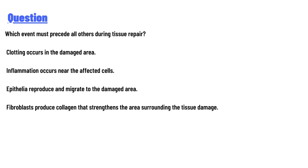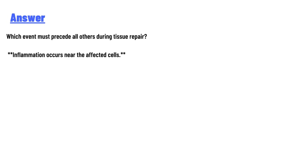The answer options are: clotting occurs in the damaged area; inflammation occurs near the affected cells; epithelia reproduce and migrate to the damaged area; fibroblasts produce collagen that strengthens the area surrounding the tissue damage.